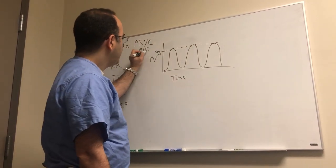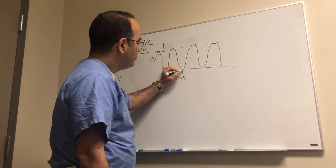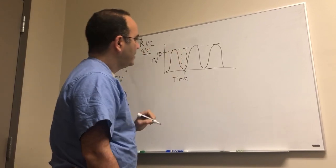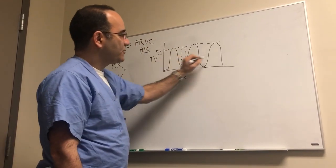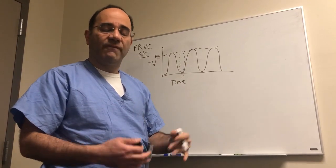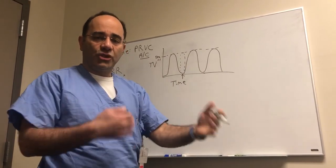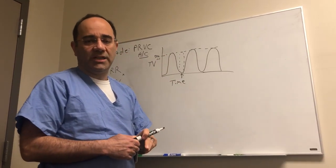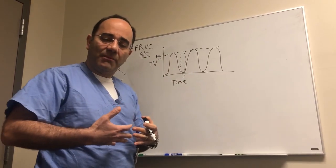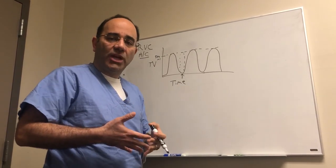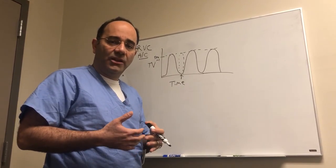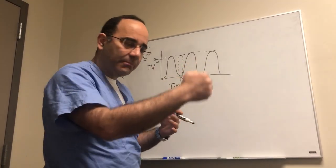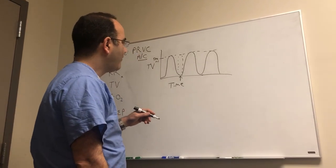In a PRVC mode or an assist control mode, if the person decides to breathe right there, he or she will get a fully supported breath. So yes, you dialed in a respiratory rate of 10. The patient decided he wants to breathe 14 times per minute. Those additional four breaths will receive 500 milliliters of air with very little effort. All the person has to do is contract their diaphragm a little bit. The machine will sense a negative change in the airway pressure and in doing so, it'll go ahead and deliver 500 milliliters of air almost like a piston being pushed into the mouth. No effort required for the patient.